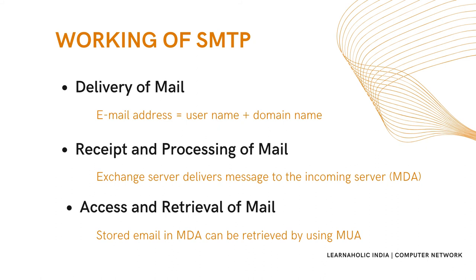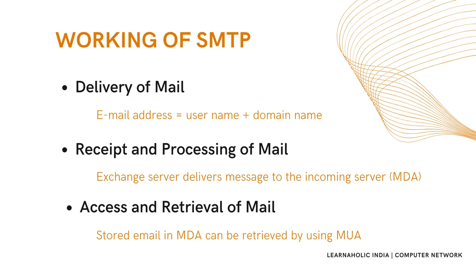If the domain name of the recipient's email address is different from the sender's domain name, the MSA will send the mail to the Mail Transfer Agent (MTA) to relay the email. The MTA will find the target domain by checking the MX record from the Domain Name System (DNS) to obtain the target domain. The MX record contains the domain name and IP address of the recipient's domain. Once the record is located, the MTA connects to the exchange server to relay the message. Step four is receipt and processing of mail - once the incoming message is received, the exchange server delivers it to the Mail Delivery Agent (MDA), which stores the email until the user retrieves it.